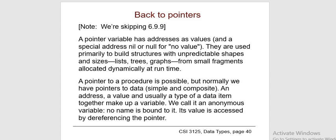In pointer declaration, we only declare the pointer but do not initialize it. To declare a pointer, we use the asterisk dereference operator before the name. A pointer declared but not initialized points to some random memory address — such pointers are called wild pointers. Pointer initialization is the process of assigning a value to a pointer variable. We generally use the ampersand (&) address-of operator to get the memory address of a variable and store it in the pointer variable.